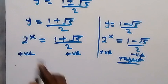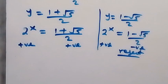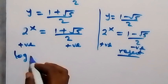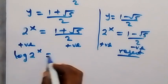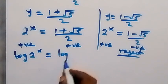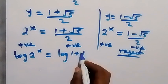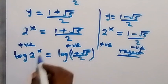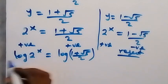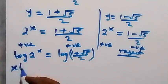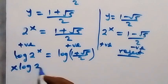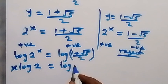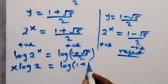Working on the valid side, we can take the log on both sides. Then we have log of 2 to the power x equals to log of 1 plus root 5 over 2. We apply the logarithm power rule, so x can be brought out in front, giving x times log 2 equals to log of 1 plus root 5 over 2.